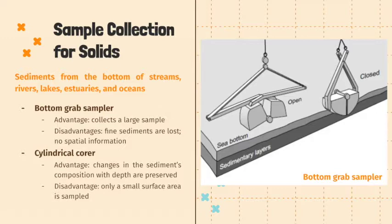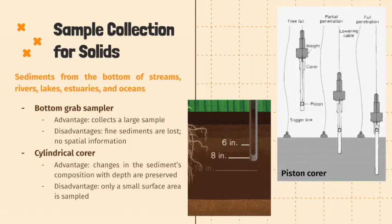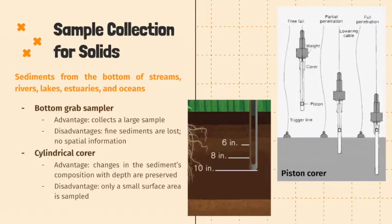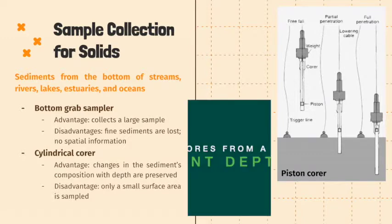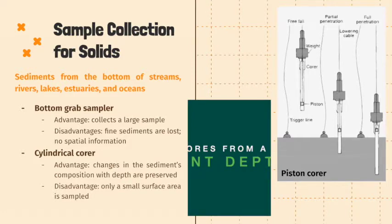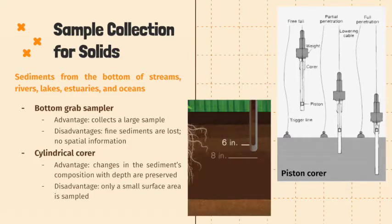However, the disadvantage of using the bottom grab sampler is that finer sediments are usually lost as water flows out. Another disadvantage is that there is no spatial information, both laterally and with depth, since the sample gets mixed while it is collected. Another instrument used to collect sediments below bodies of water is the cylindrical corer. It is dropped into the sediment until full penetration. Its advantage is that the change in sediment composition with depth is preserved, while the disadvantage is that only a small surface area is sampled.